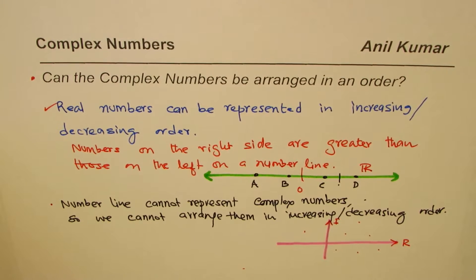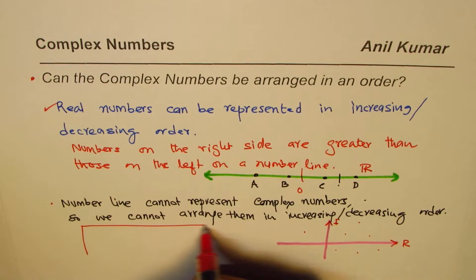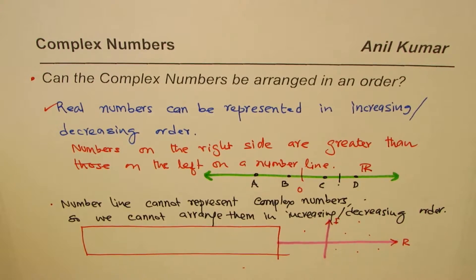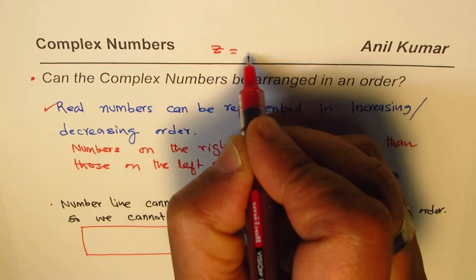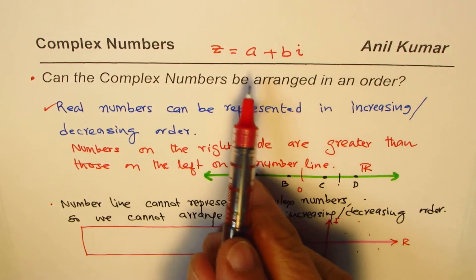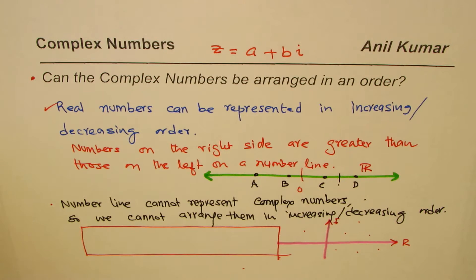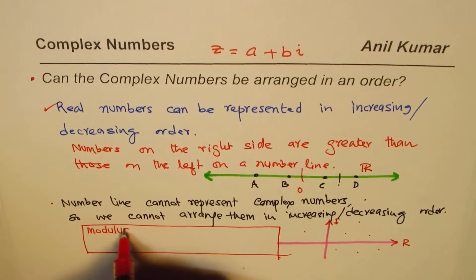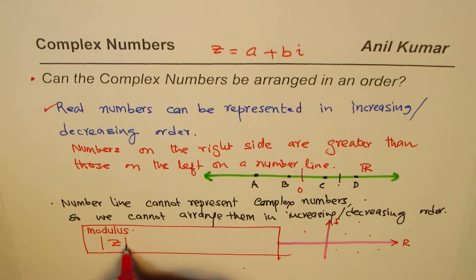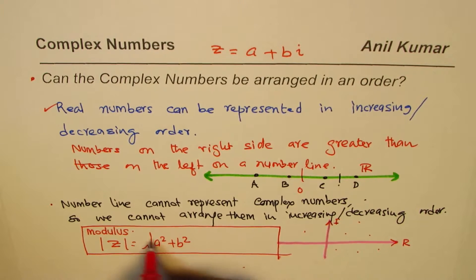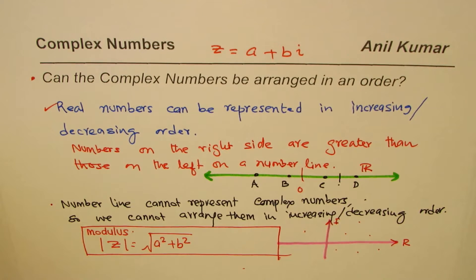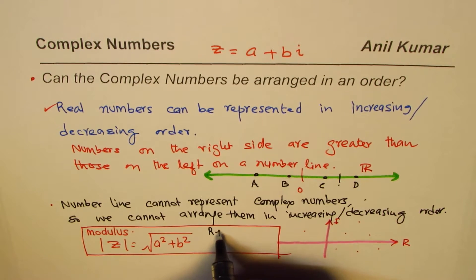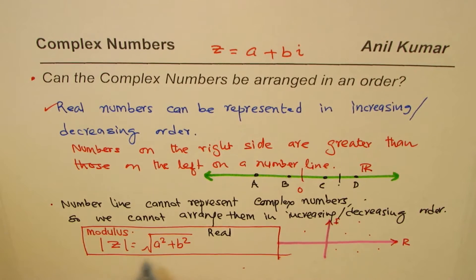Now, one more very important thing to understand. A complex number z equals a plus bi — that is the complex number which we cannot arrange in increasing or decreasing order. But the modulus of a complex number is the square root of a squared plus b squared, and that value is real. So modulus is real.